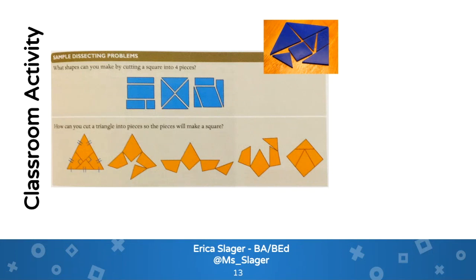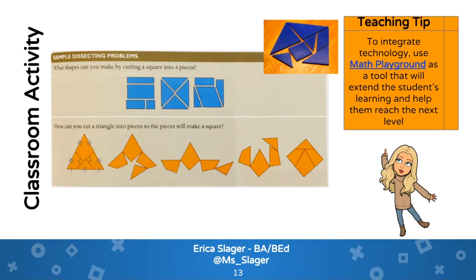Although level three is typically seen at high school, there are still activities for elementary students to help them succeed later. Using tangrams is a great way to help students understand and achieve this level. We can ask them: what shapes can you make by cutting a square into four pieces, or how can you cut a triangle into pieces so they make a square? To integrate technology, Math Playground is an online resource where students create shapes using tangrams online, rotating them to fit together. The site also has a share-to-Google Classroom option, making it easy for students to access at home as well as in class.